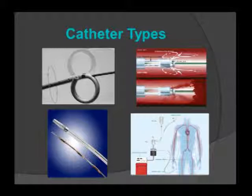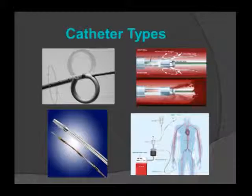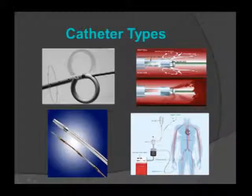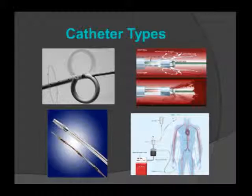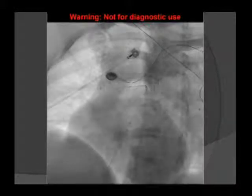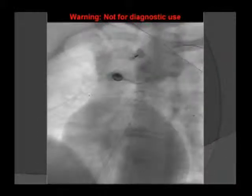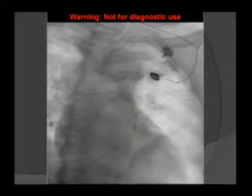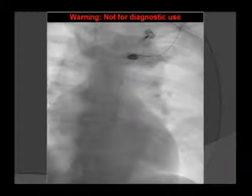The Angiovac is a large catheter that operates like an ECMO device — it extracts blood, filters it, and returns it to the system, requiring significant local expertise. For catheter-directed therapy, we obtain groin access, advance wires, and place catheters in both the right and left pulmonary arteries to administer thrombolytics — visible on imaging in their anatomical position.